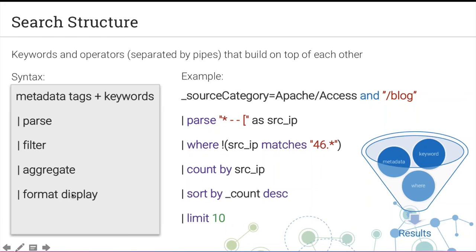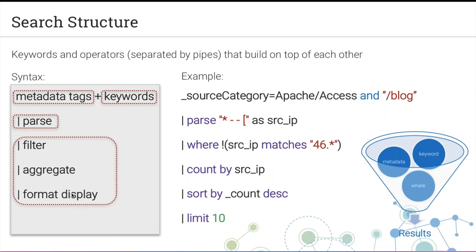The syntax is: metadata plus keywords, then parse to extract fields, then some sort of formatting or aggregation. I want to walk you through each part — what metadata tags look like, what keywords are available, what kinds of parsing you can do, and what kinds of aggregation or formatting you can do with your data.